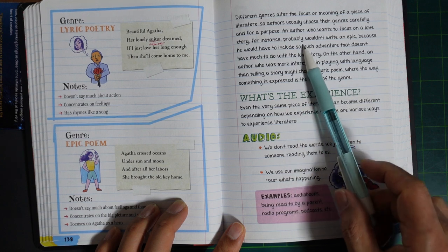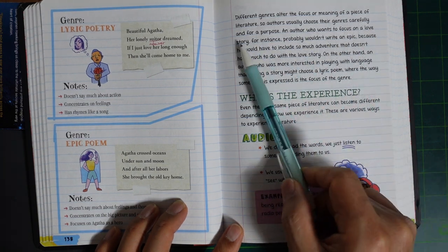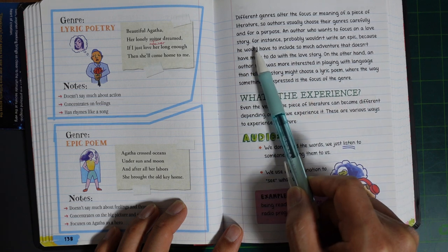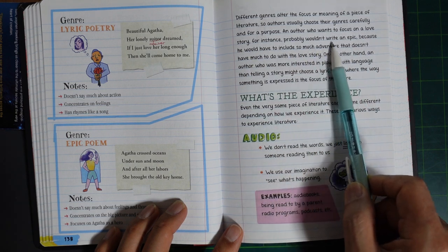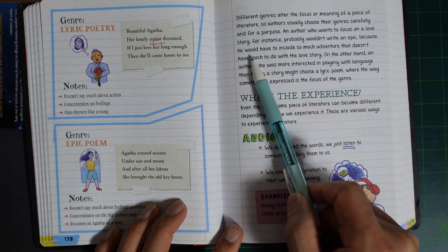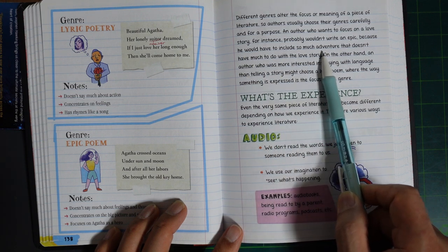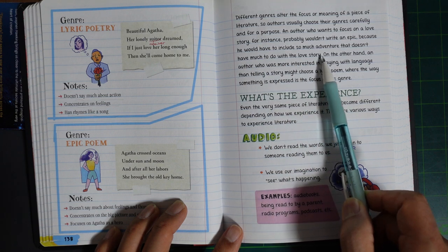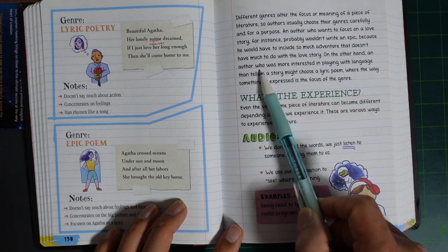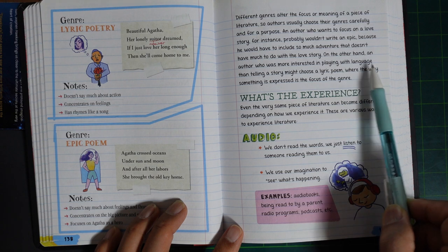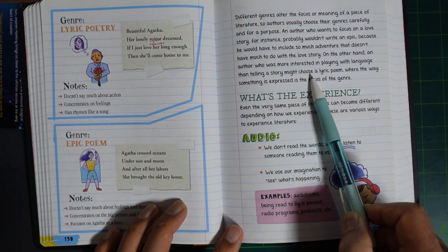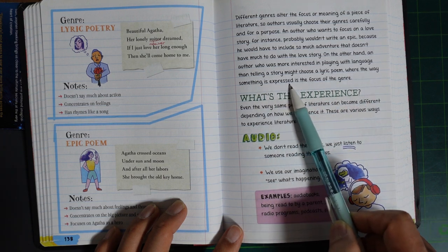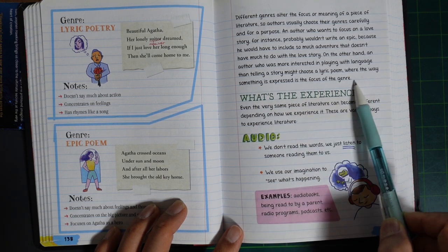So, authors usually choose their genres carefully and with purpose. An author who wants to focus on a love story, for instance, probably wouldn't write an epic because she would have to include so much adventure that doesn't have much to do with the love story. On the other hand, an author who was more interested in playing with language than telling a story might choose a lyric poem, where the way something is expressed is the focus of the genre.